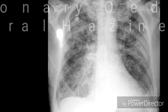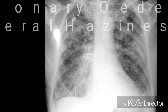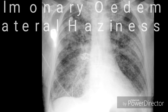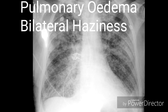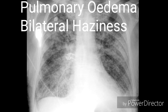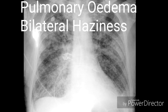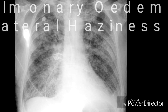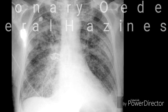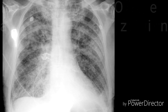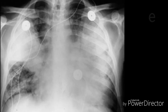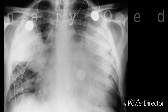Now I am going to show the chest X-ray of a 54-year-old male patient admitted in the ICU, showing bilateral pulmonary edema. As you can see, there is bilateral perihilar haziness as well as peribronchial cuffing.